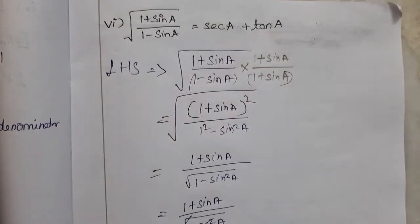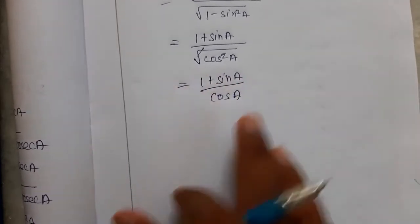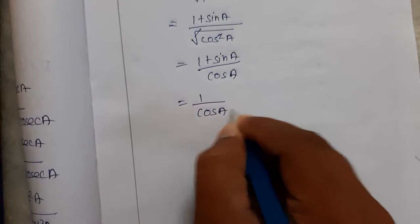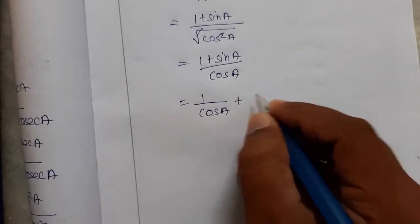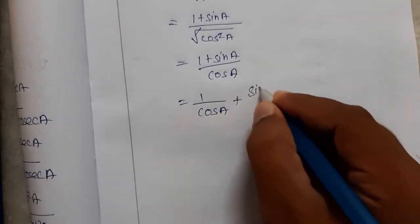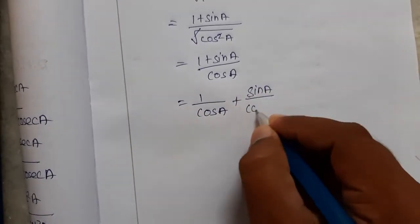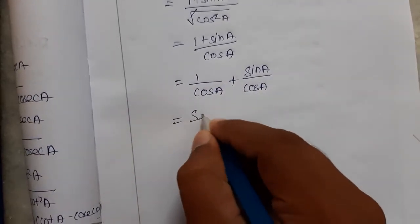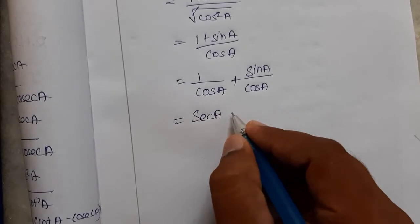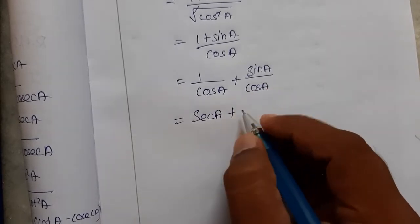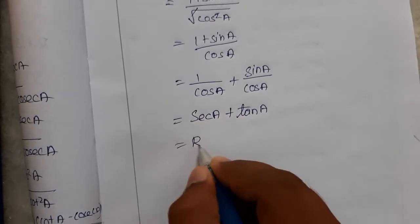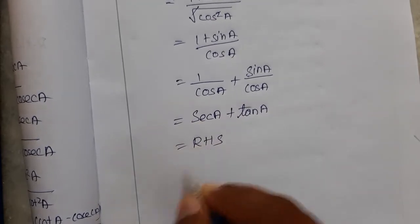We are now at 1 plus sin A divided by cos A. Splitting the numerator, we get 1 by cos A plus sin A divided by cos A. Now 1 by cos A is sec A, and sin A by cos A is tan A. So we get sec A plus tan A, which is exactly RHS. Hence proved.